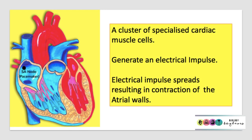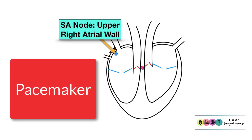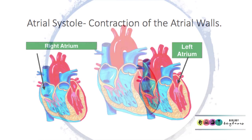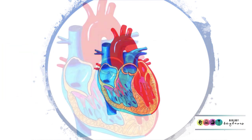Located in the upper right atrial wall of the heart is a cluster of very specialised cardiac muscle cells. They are known as the SA node, or the sinoatrial node, otherwise referred to as the pacemaker. This specialised bundle of cells generates an electrical impulse that passes over the walls of the atria, causing them to contract — atrial systole.